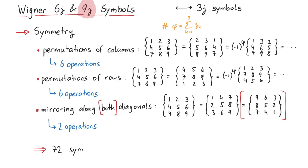As we have seen in this video, the many symmetry operations of the 6j and 9j symbols make them a very useful tool to do recouplings of angular momenta in quantum mechanics. And that's pretty much it for this video. Thanks for watching.